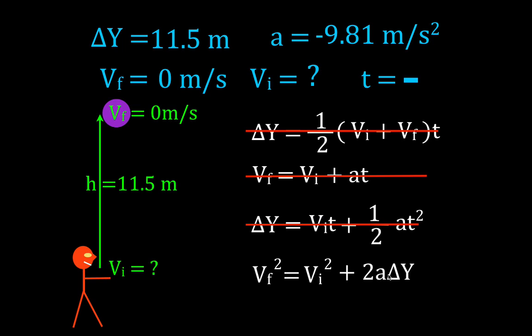Let's see. It has the change in position. We know the change in position. It has the acceleration, we know the acceleration. It has the final velocity, we know the final velocity, and it has the thing we're looking for. So therefore this is the equation we're going to use. It has the variable we're looking for, we know the other three, so we can use this equation to solve for the initial velocity.